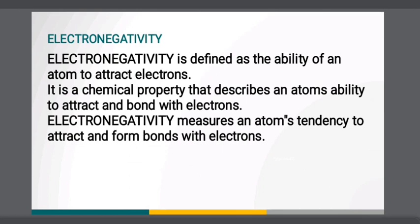Electronegativity is defined as the ability of an atom to attract electrons. Electronegativity measures an atom's tendency to attract and form bonds with electrons. This property exists due to the electronic configuration of atoms.